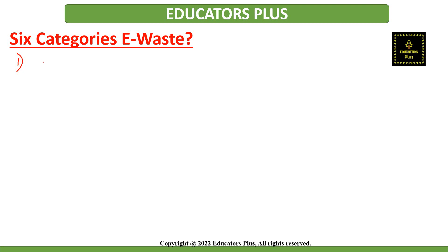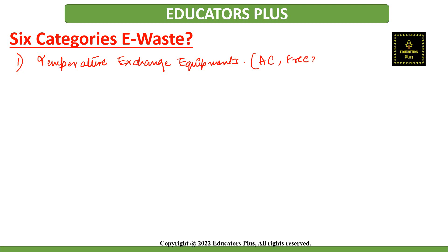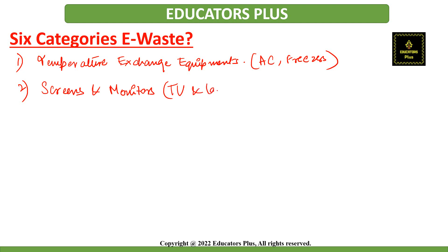E-waste is divided into 6 broad categories. The first is Temperature Exchange Equipment, which includes refrigerators, freezers, air conditioners, and heat pumps. The second category is Screens and Monitors, which includes TVs, laptops, notebooks, and tablets. The third category is Lamps, which includes fluorescent lamps, high-intensity discharge lamps, and LED lamps.